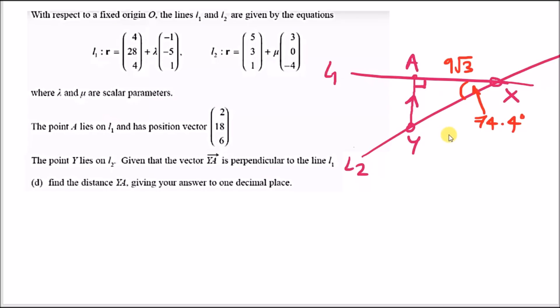We can use SOHCAHTOA to work this out. Let's label the unknown side as X for convenience. From here, you can picture a right angle triangle with length 9 root 3, length X here, and the opposite angle of 74.4 degrees.